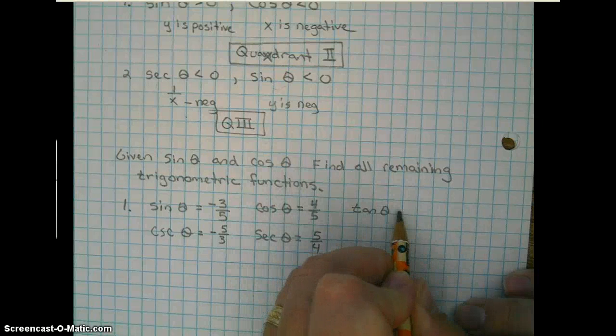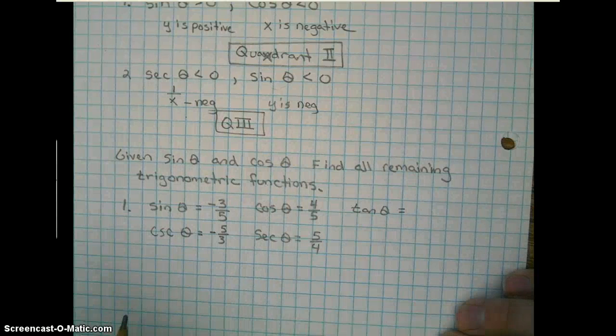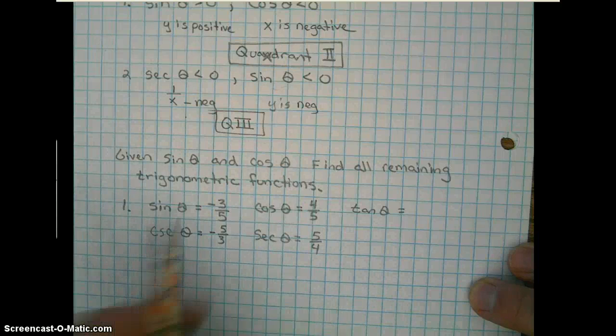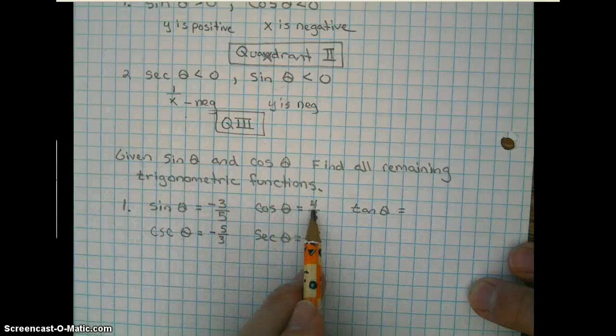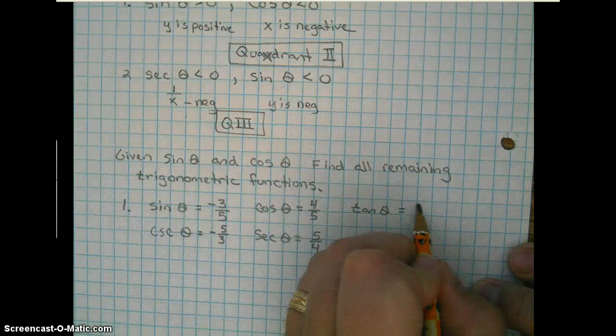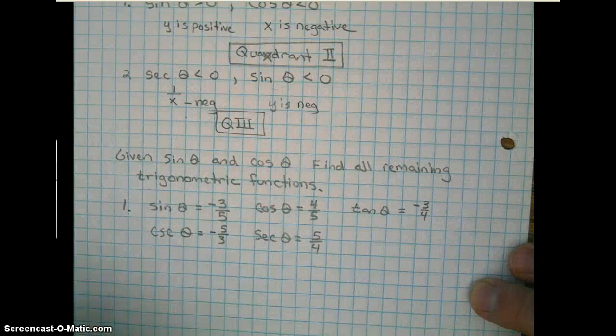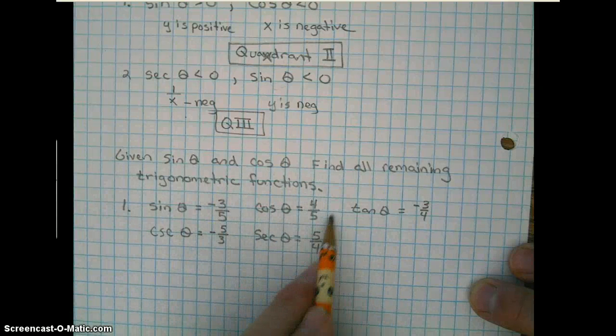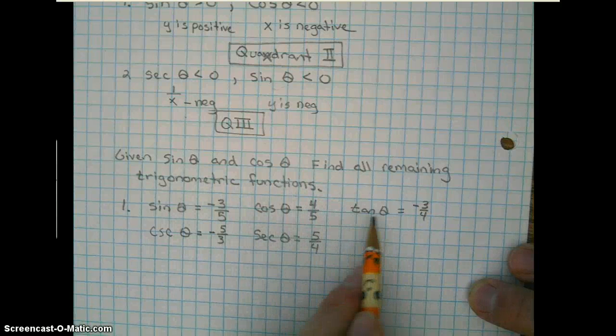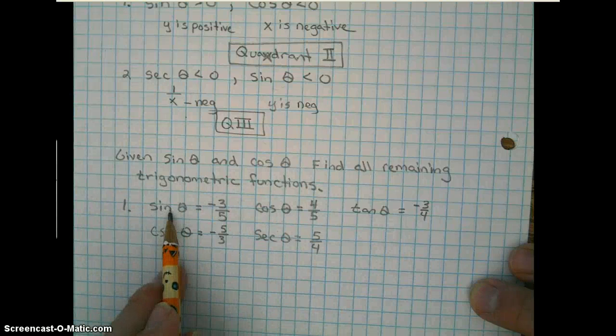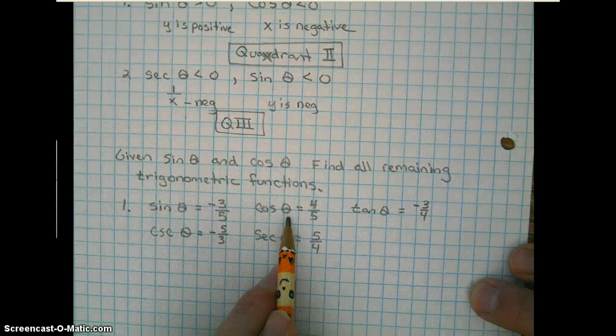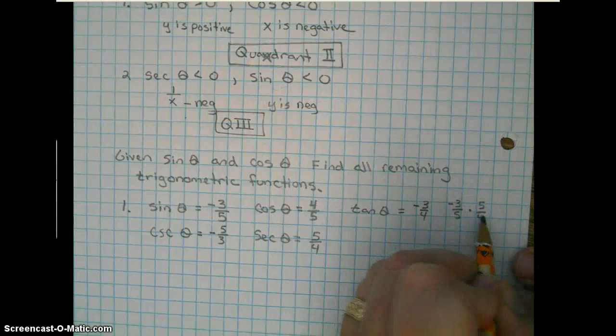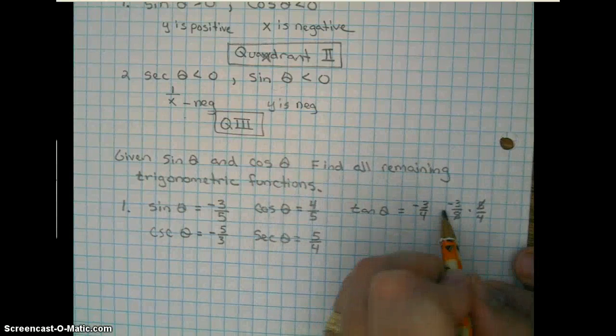Tangent, if you'll recall, the definition is y over x. So you can do this one of two ways. The easy way is take the y value, which is negative 3, and put it over the x value, which is 4, and we get negative 3 fourths. Or you can take this whole value and multiply it by the reciprocal of this value. Because remember, the definition of tangent is y over x. So we could put the sine divided by the cosine, which would be negative 3 fifths times the reciprocal 5 fourths. And the fives cancel, giving us negative 3 fourths.